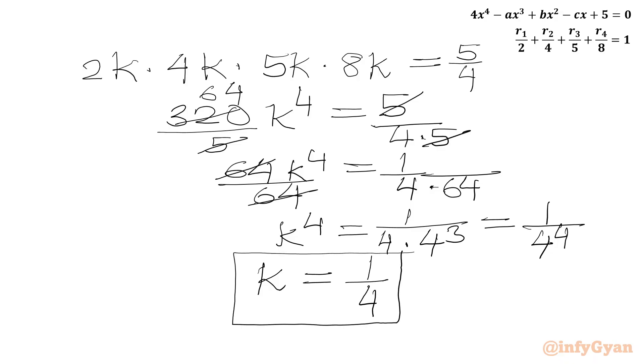Once k is known we are knowing R1, R2, R3, R4. So k is equal to 1 over 4. Now we will write R1 equal to 2k, R2 equal to 4k, R3 equal to 5k and R4 equal to 8k.